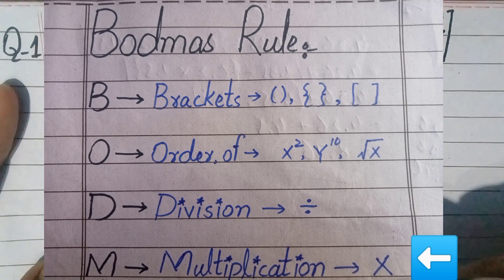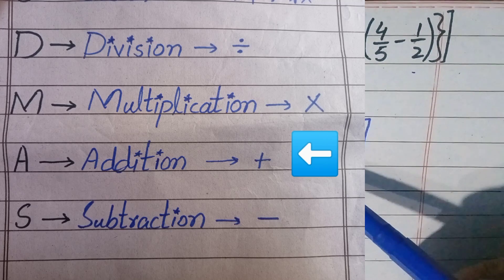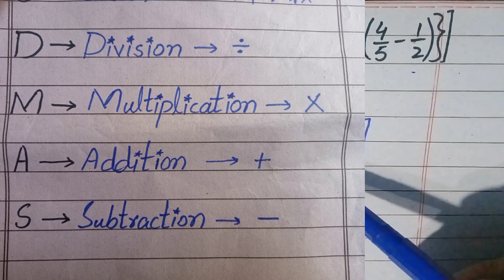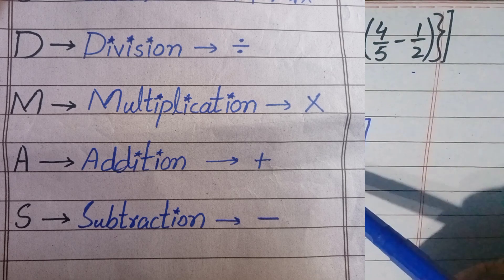In the third step we do division, and the fourth letter M stands for Multiplication, so in the fourth step we do multiplication. Remember that we can do division and multiplication from left to right. The fifth letter A stands for Addition, so in the fifth stage we do addition. The sixth letter S stands for Subtraction, so in the last step we do subtraction. Also remember we can do addition and subtraction from left to right.